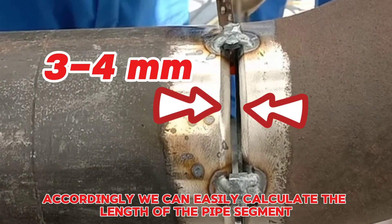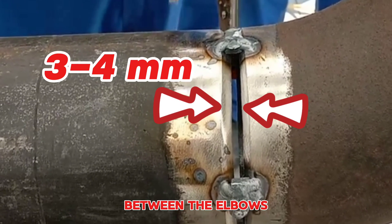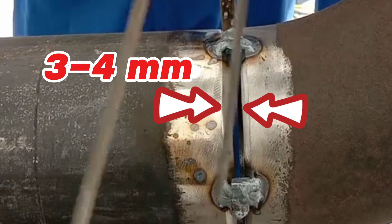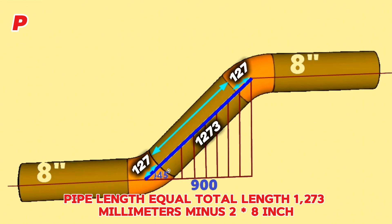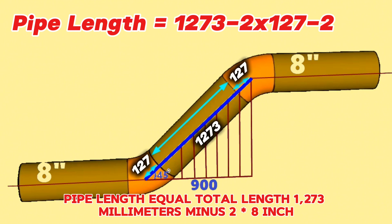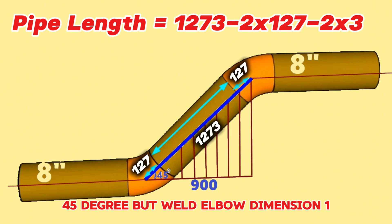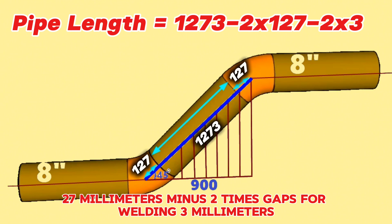Accordingly, we can easily calculate the length of the pipe segment between the elbows. Pipe length equals total length 1,273 millimeters minus 2 times 8-inch 45-degree butt weld elbow dimension 127 millimeters minus 2 times gaps for welding 3 millimeters.